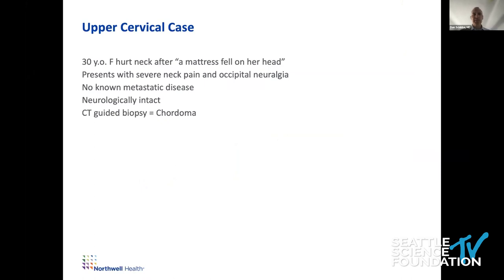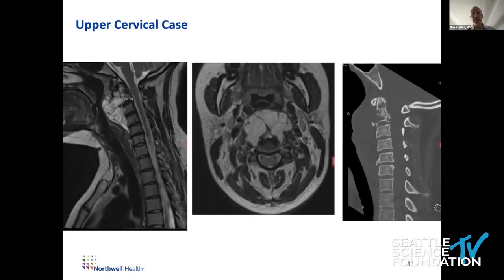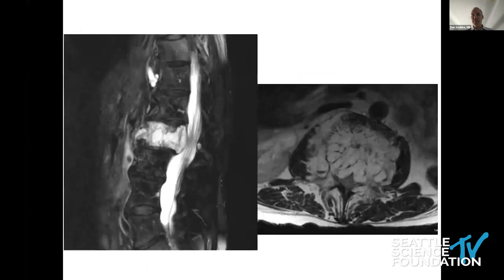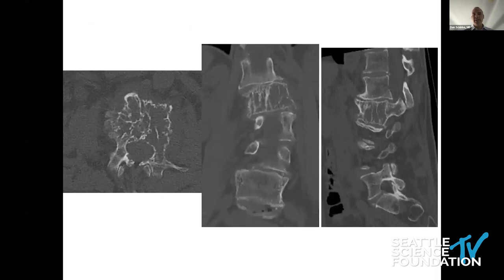An upper cervical case: a 30-year-old female who was moving a mattress and it fell on her head — not the most significant trauma, but trauma nonetheless. She presented with severe neck pain, occipital neuralgia, no metastatic disease, neurologically intact, with CT-guided biopsy showing chordoma. CT shows an upper cervical lytic mass with an exophytic soft tissue component. Next, a lumbar case: an otherwise healthy patient who does daily yoga with mild abdominal pain, neurologically intact, with a lesion showing a corduroy, jailhouse, or polka dot pattern on imaging.